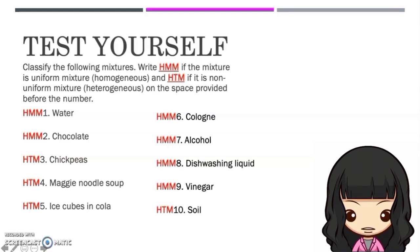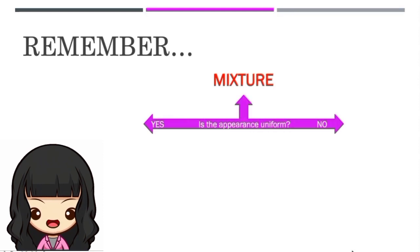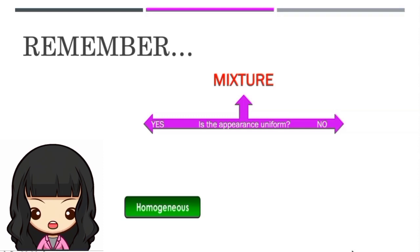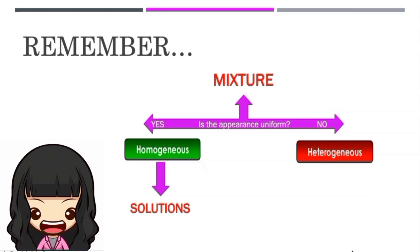Good job! Before we end this episode, always remember that when identifying a mixture, you need to answer this question: Is the appearance of the mixture uniform? Yes or no? If you answered yes, then the mixture is classified as homogeneous. But if you answered no, then the mixture is heterogeneous. Homogeneous mixtures are most likely to be solutions. And for heterogeneous mixtures, they are most likely to be suspensions or colloids.